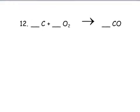Okay, in this example, there's one carbon, two oxygens, over here there's one carbon, one oxygen. So if I put a 2 in front of here, these both become 2, and put a 2 in front of the carbon, balanced.